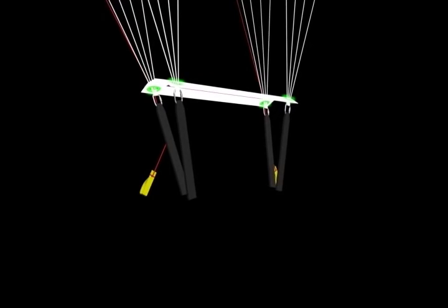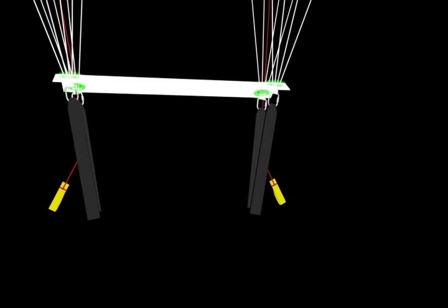Now let's take a look straight up the front riser and see how the lines attach at the link and where they attach at the parachute.